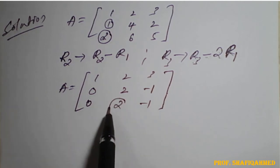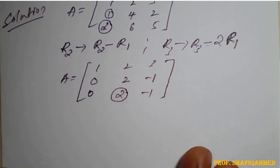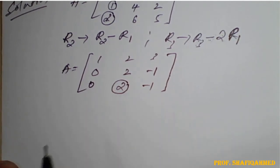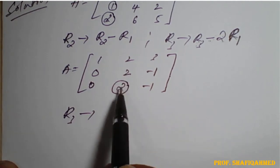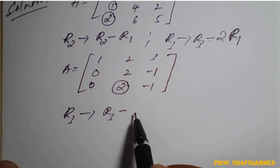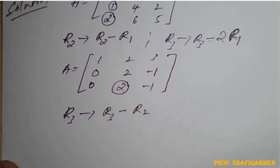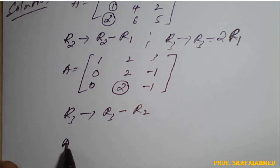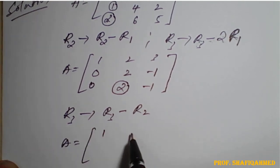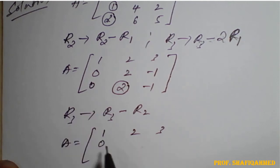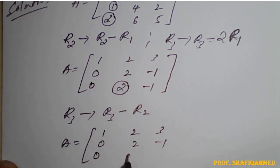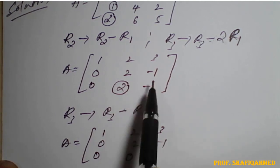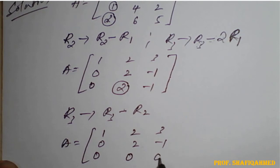Next, the target is to make the element in row 3, column 2 equal to 0. We operate R3 minus R2: 0 minus 0 is 0, 2 minus 2 is 0, minus 1 minus of minus 1 gives minus 1 plus 1 equals 0.